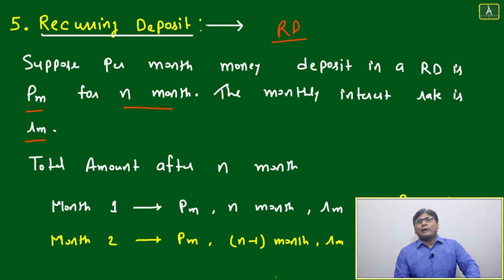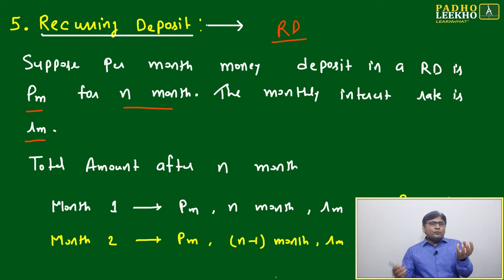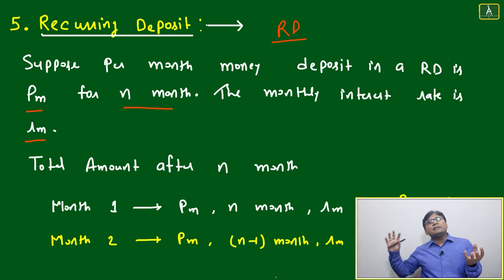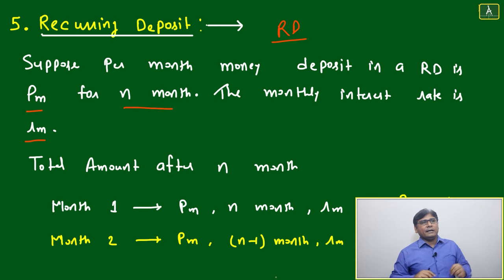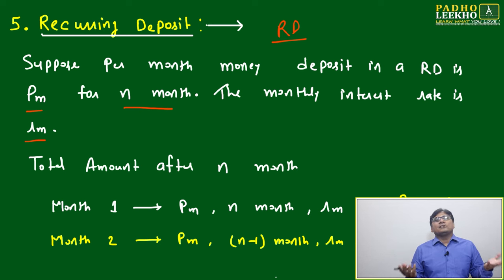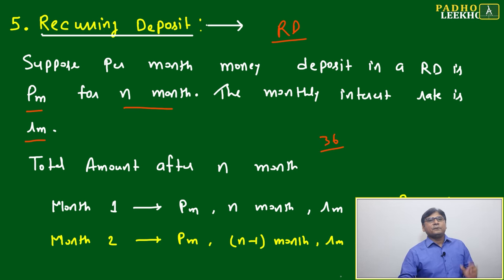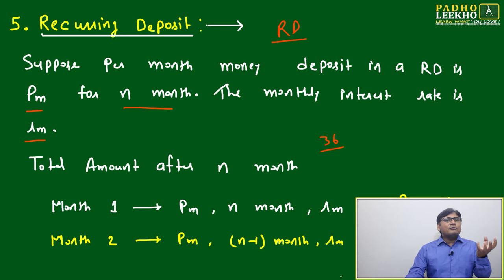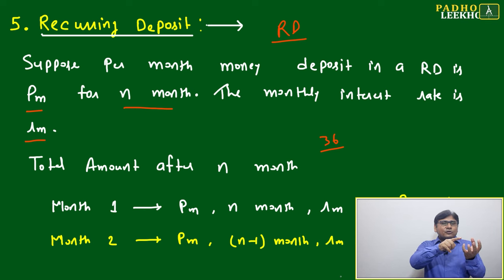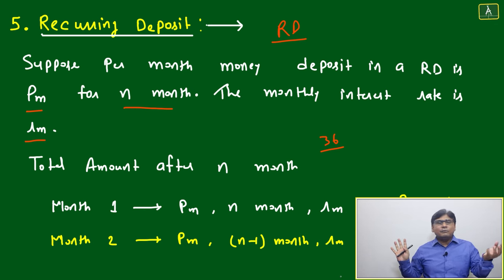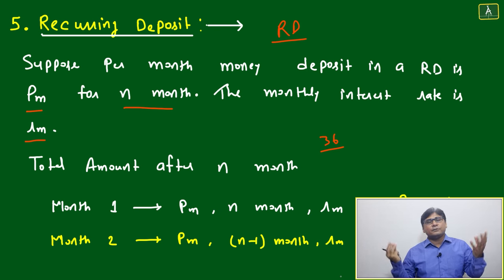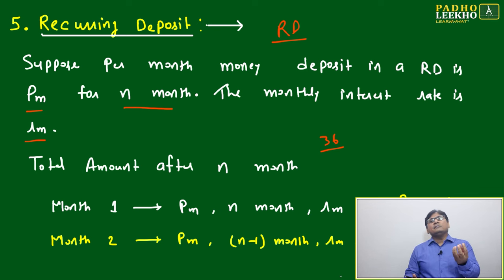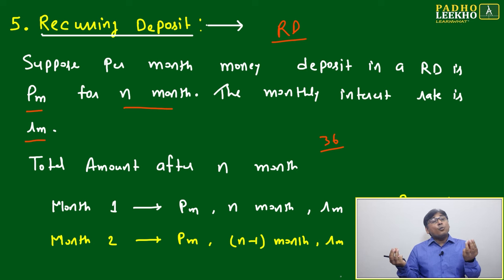How to calculate the total amount after N months? Suppose you are collecting the money after 3 years, meaning 36 months is the total tenure — your RD matures after 36 months. Whatever you put in the first month, you will get interest for 36 months, because you deposited in the first month and it matures after 36 months. In the second month you put the same amount, but you only get interest for 35 months because one month has already elapsed.